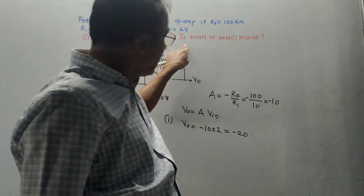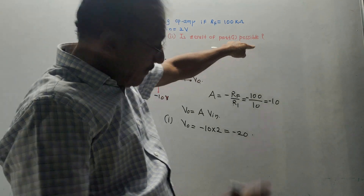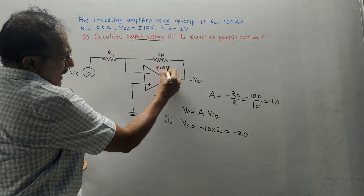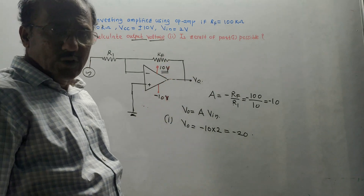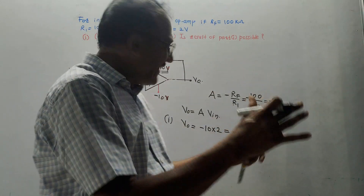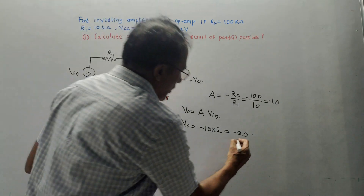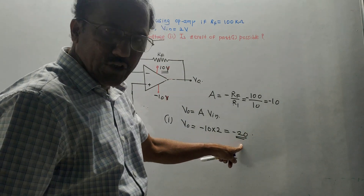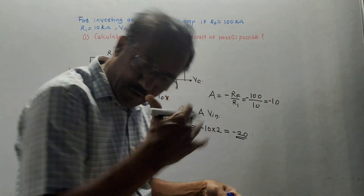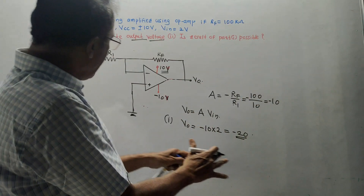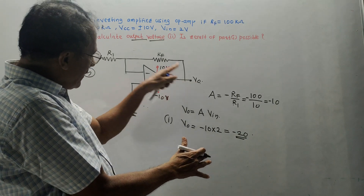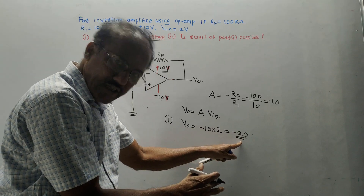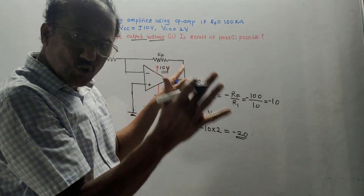For part 2: is -20 volts practically possible? The supply voltage is ±10 V, so at maximum the output is 90% of 10 volts = 9 volts. The calculated value of -20 volts exceeds the supply, so practically this output is not possible.